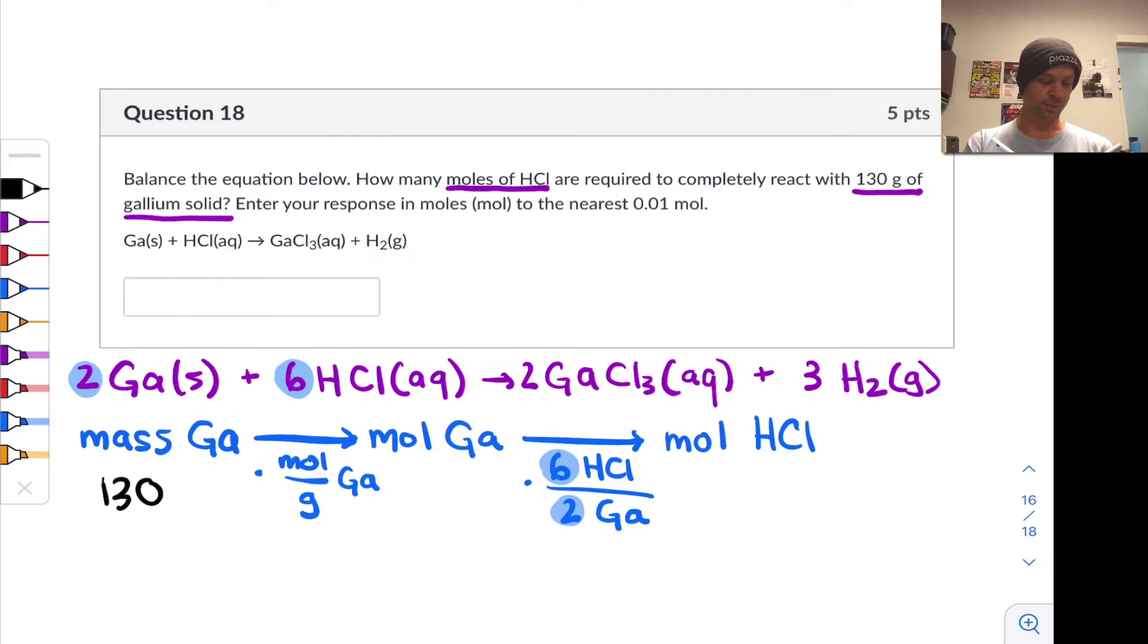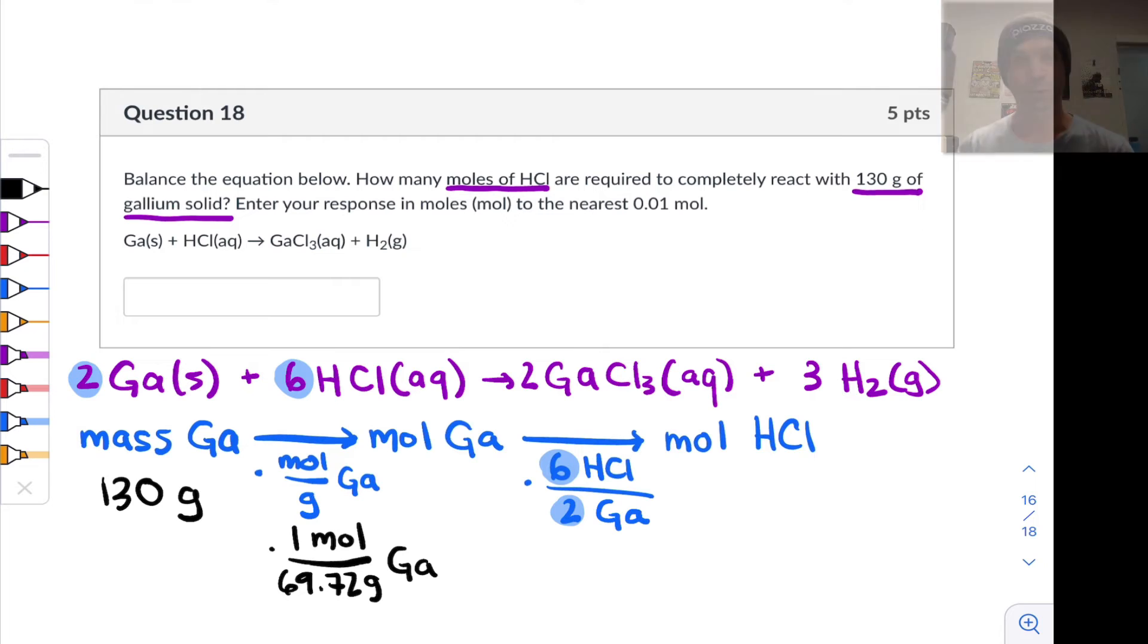We have 130 grams of gallium given. The grams per mole of gallium, that's going to come from the periodic table, and that is 69.72. So we're going to multiply by one mole divided by 69.72 grams for gallium solid, gallium metal. Gallium is actually close to a liquid at room temperature, but not quite. And then we're going to multiply by 6 over 2 or multiply by 3 to figure out the final answer. So let's plug all that in and see what we get.